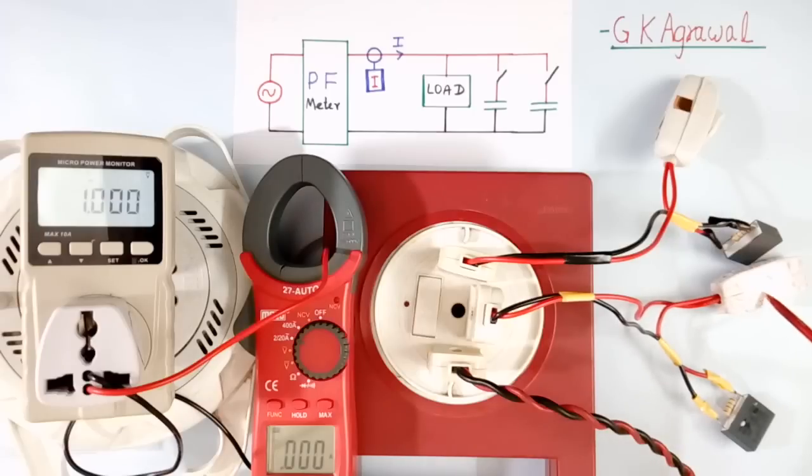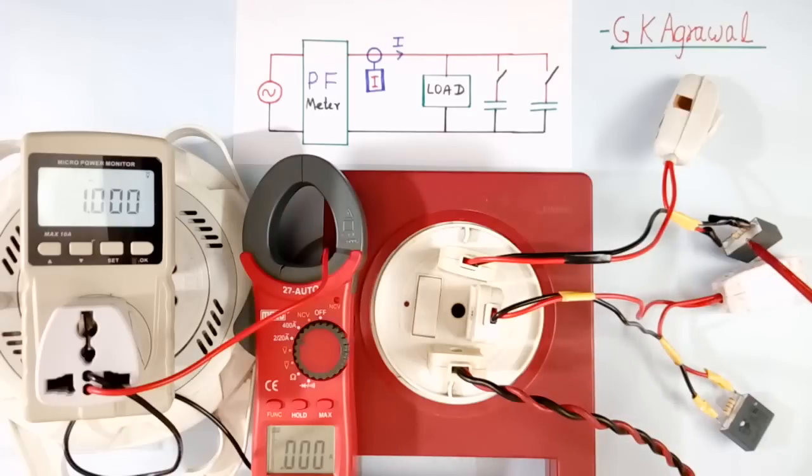And this switch is this. You are seeing one resistor here in parallel of this capacitor. Here also. This resistor is 2.2 mega ohm, 1 watt. This is to discharge this capacitor.